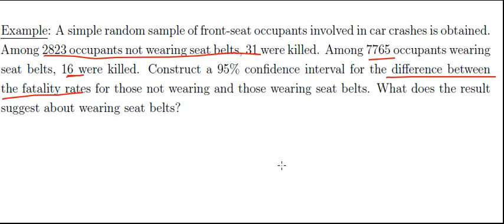All right, so first I want to calculate p-hat 1. That's the sample proportion for what we're calling group 1, which is the not wearing seatbelt. So I have 31 divided by 2,823.